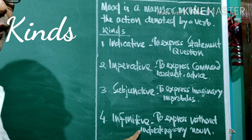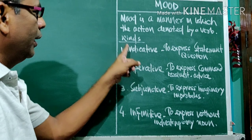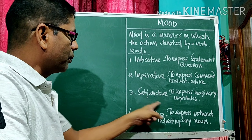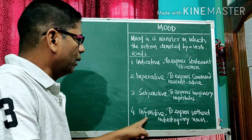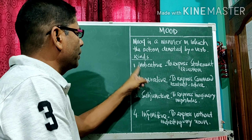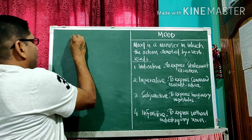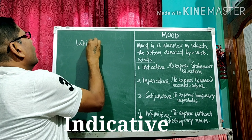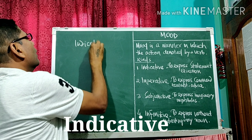There are four kinds of moods: indicative, imperative, subjunctive, and infinitive.